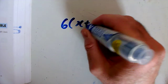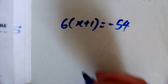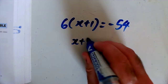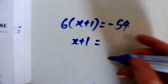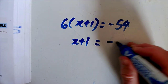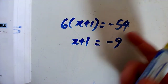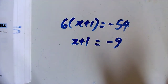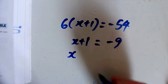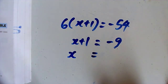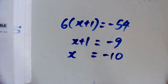Question Q: 6 brackets x plus 1 equals minus 54. I'd like to get x plus 1 on its own, so dividing both sides by 6, x plus 1 equals minus 9, since minus 54 divided by 6 is minus 9. Taking away 1 from both sides, x equals minus 10.